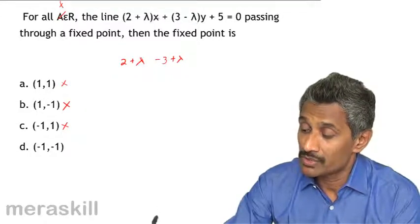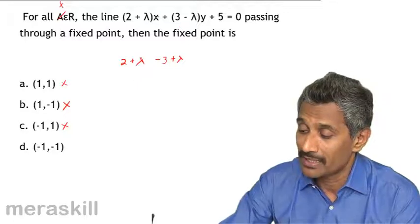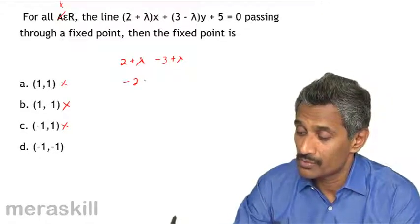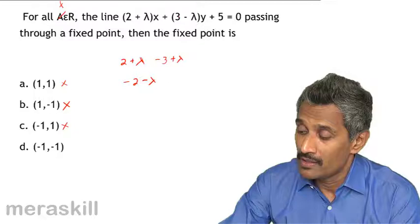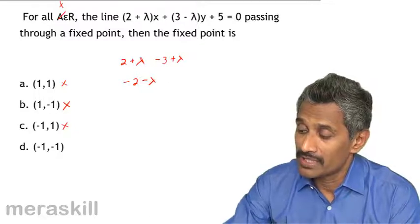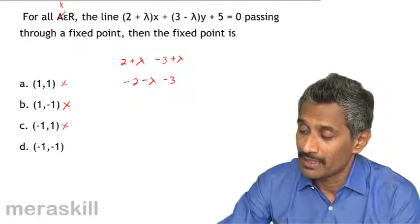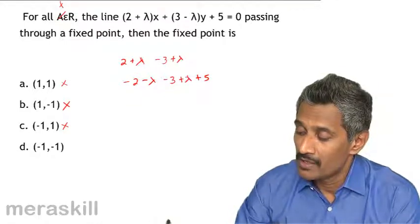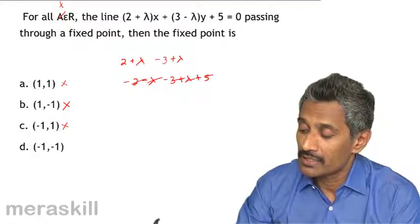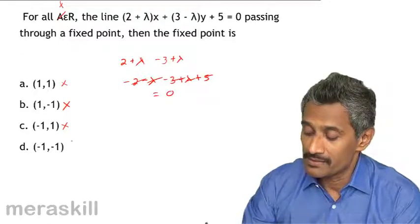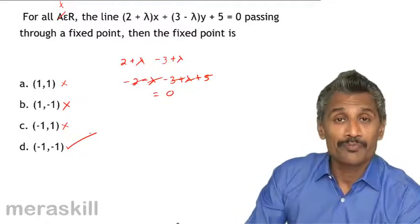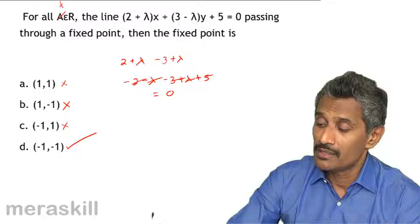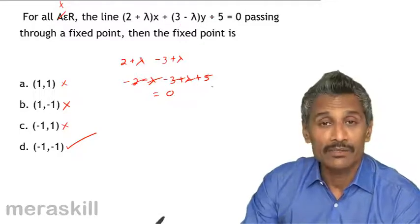We get 2 plus lambda into x. That is, 2 plus lambda into minus 1. That is, minus 2 minus lambda. 3 minus lambda into 1, 3 into minus 1 minus 3, minus lambda into minus 1 plus lambda plus 5. You see that all the terms are getting cancelled. That means, this value minus 1 minus 1 satisfies this particular equation.